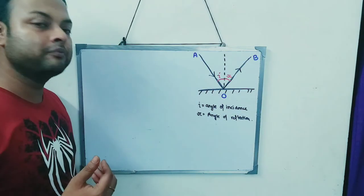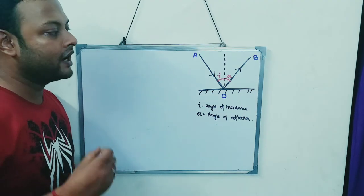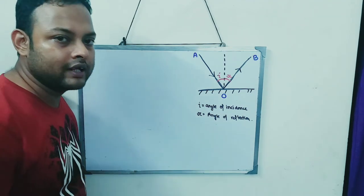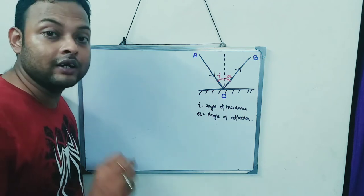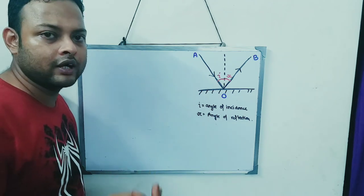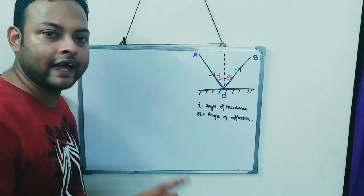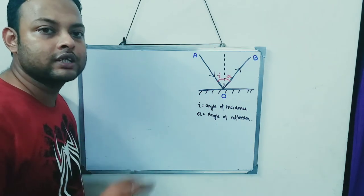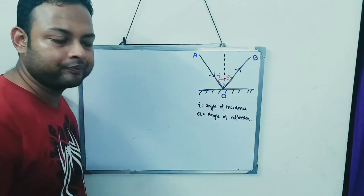In my previous video I discussed the terms related to the laws of reflection: incident ray, reflected ray, normal, angle of incidence, angle of reflection, and point of incidence. Those six terms I covered with you.